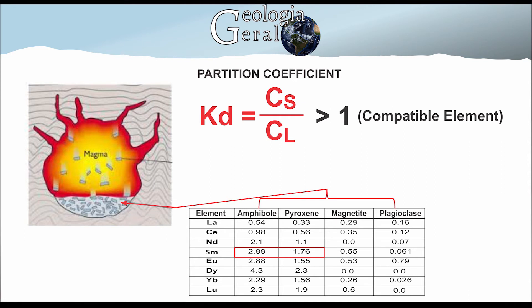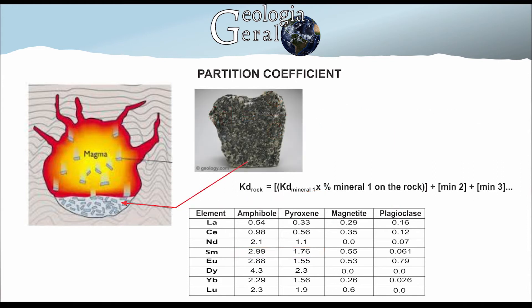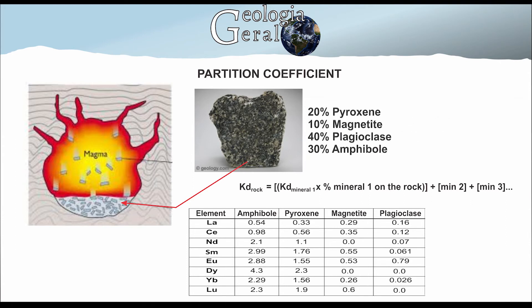However, for the compatibility analysis of an element with a rock, we have to take into account the percentage of the mineral in the composition of the rock. The total distribution coefficient of a given element is calculated using the KD values of this element in each of the rock's minerals, together with the modal participation of that mineral in the rock. For the example mentioned, we have 20% pyroxene, 10% magnetite, 40% plagioclase, and 30% amphibol. The calculation should be done as follows.